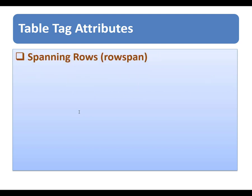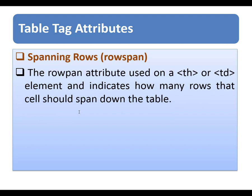Another attribute is the rowspan attribute. You may also need entries in a table to stretch down across more than one row. The rowspan attribute is used on a th or td element to indicate how many rows a cell should span down the table.